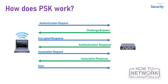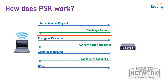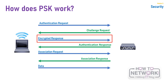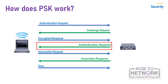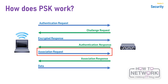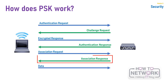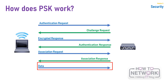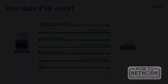The PSK client authentication and association process is as follows. First, the client sends an authentication request to the AP. Next, the AP sends a clear-text challenge phrase to the client. Then the client encrypts the phrase with the shared key and sends it to the AP. Fourth, if the AP can decrypt the phrase with the key, it sends an authentication confirmation to the client. Once authenticated, the client makes an association request. The AP sends an association response. Then a virtual port is opened and the client data is now allowed. At this point, data is encrypted using the same key.